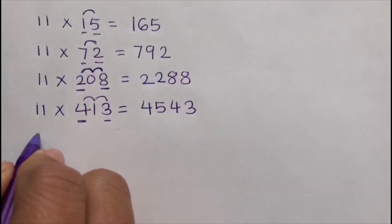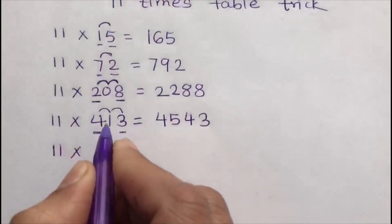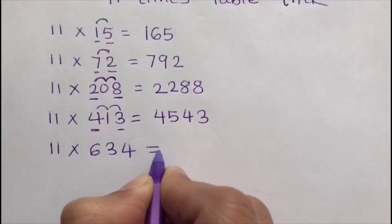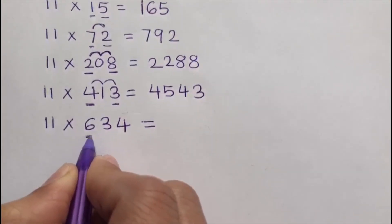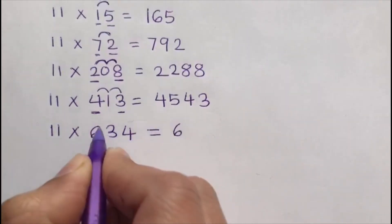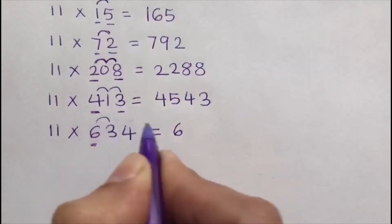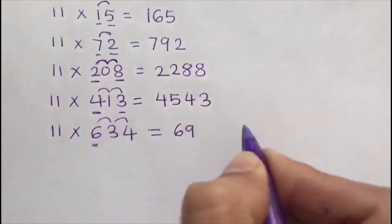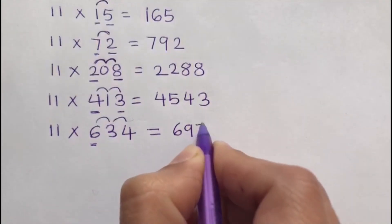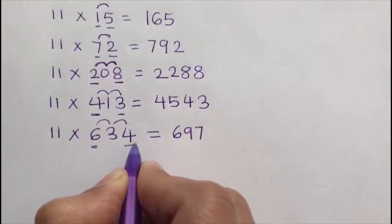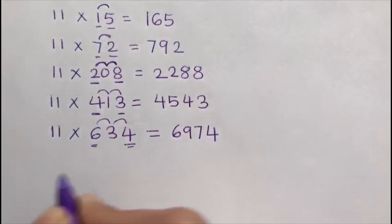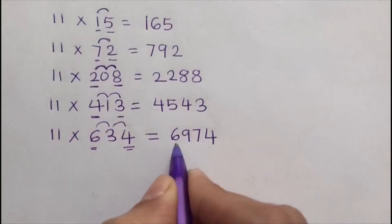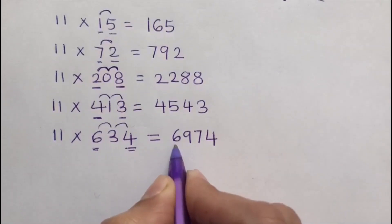Next: 11 times 634. The first digit is 6, so I write 6 here. Then add 6 and 3, which gives 9. Then add 3 and 4, which gives 7. Write the last digit, which is 4. So when we multiply 634 by 11 we get 6974.